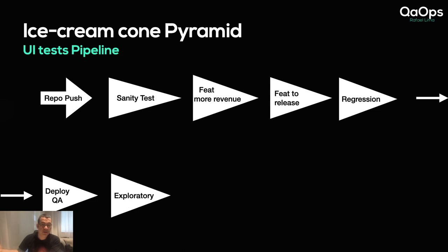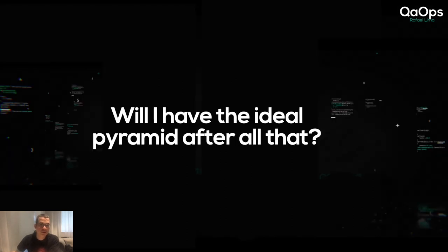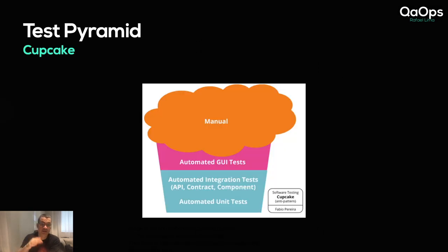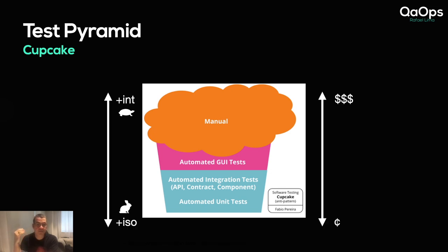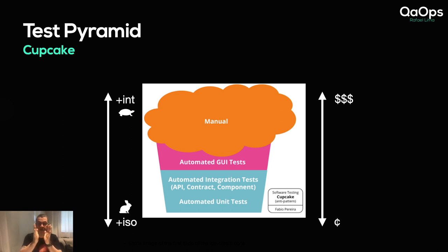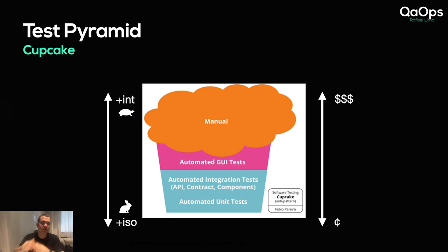After checking the upcoming release feature, you run your full regression — everything else — because now you know the most important things for your deployment are already passing. Then you deploy to QA and do exploratory testing. After all of that, will you have the ideal test pyramid? Unfortunately not. What you'll have is something similar to a cupcake. If you started with a cone and now begin adding unit tests, the bottom expands until it becomes more square and eventually approaches the ideal pyramid shape.